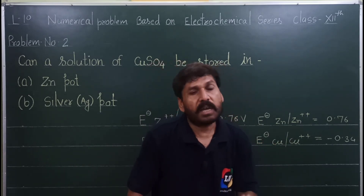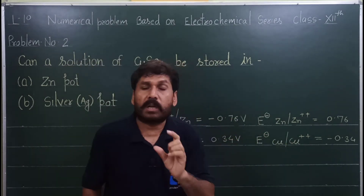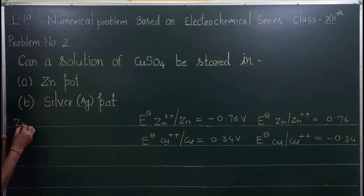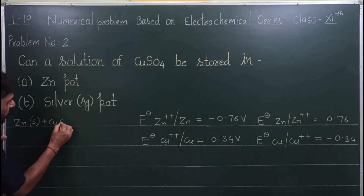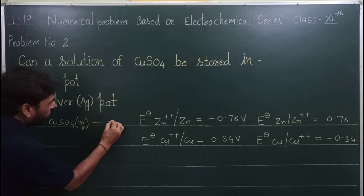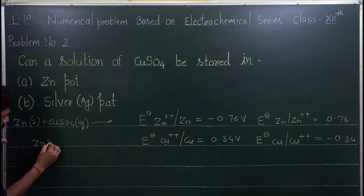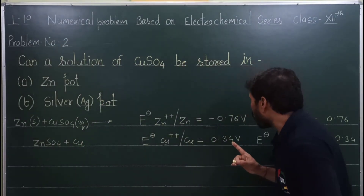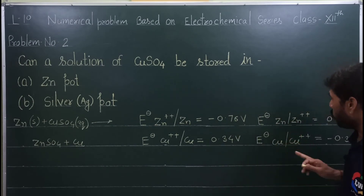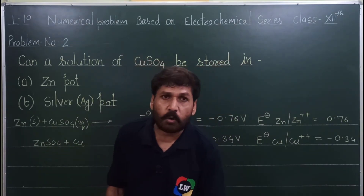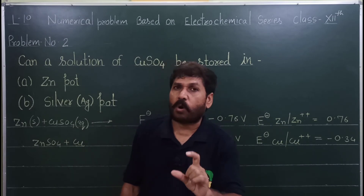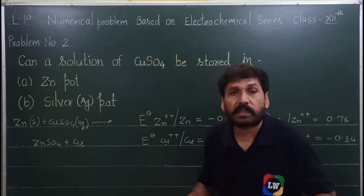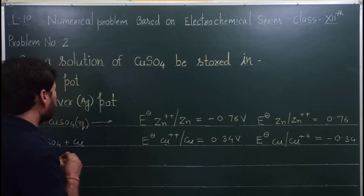इसलिए copper sulfate cannot be stored in a zinc pot। Reaction इस प्रकार होगी — Zn(s) + CuSO4(aq) → ZnSO4 + Cu। Zinc ने copper को displace कर दिया। तो rule यह है: जिसका oxidation potential ज़्यादा होगा, वो active metal होगी, और उस active metal के pot में दूसरी metal का solution store नहीं कर सकते।